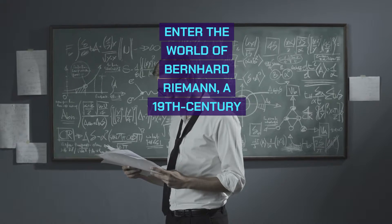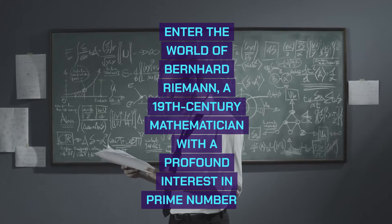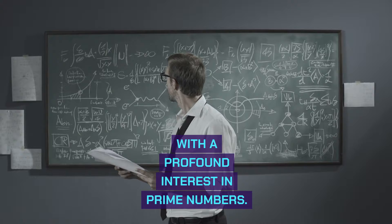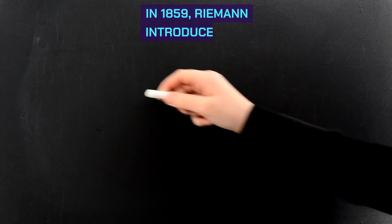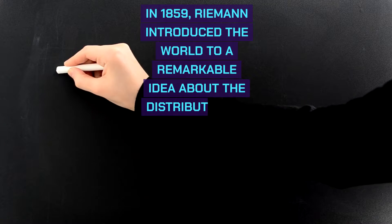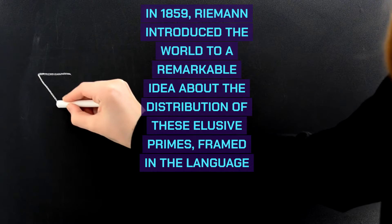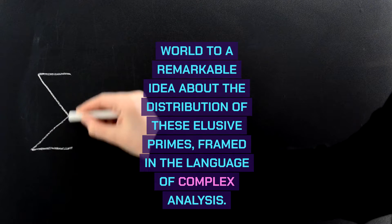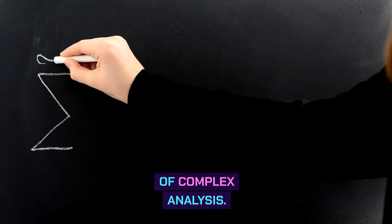Enter the world of Bernhard Riemann, a 19th-century mathematician with a profound interest in prime numbers. In 1859, Riemann introduced the world to a remarkable idea about the distribution of these elusive primes, framed in the language of complex analysis.